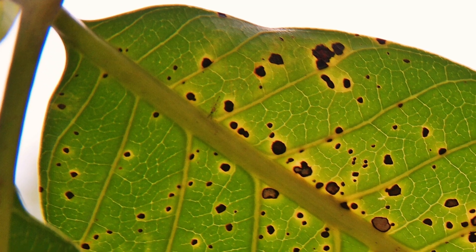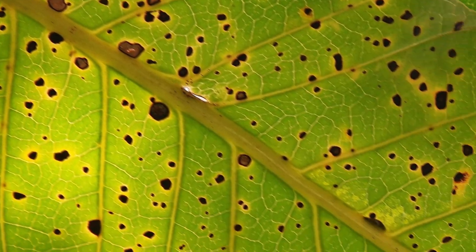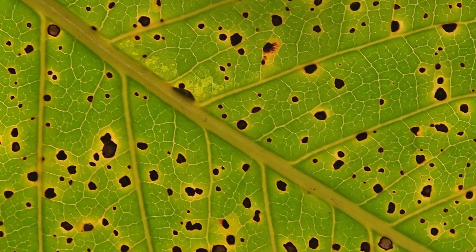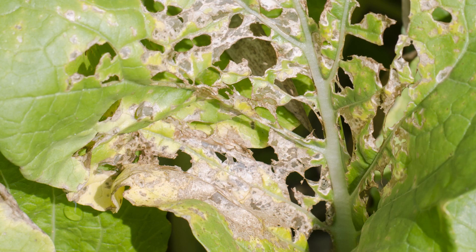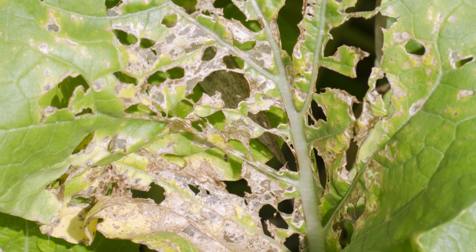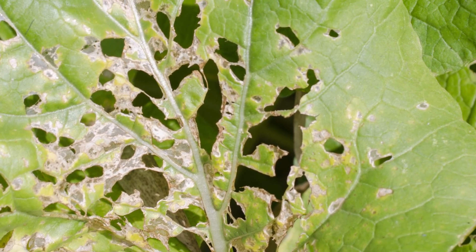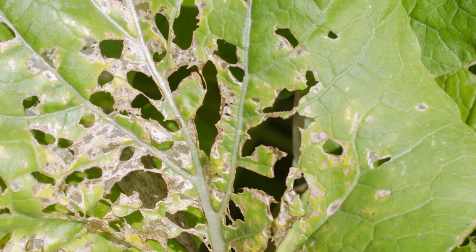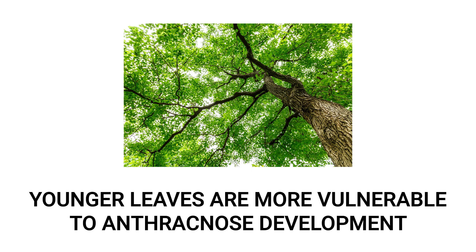Anthracnose generally looks like irregularly shaped lesions on the leaves of the affected plant. In fruit-bearing plants, lesions can also form on the fruits themselves. These lesions can look like small brown or black spots where the fungus is growing, and in some cases can cause holes to form right through the leaf. These holes are very irregularly shaped with brown or yellow edges, making them distinguishable from pest damage, which usually has some identifiable pattern.